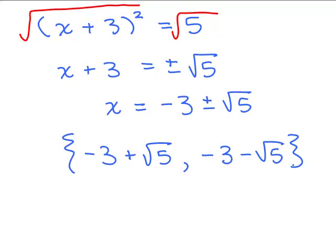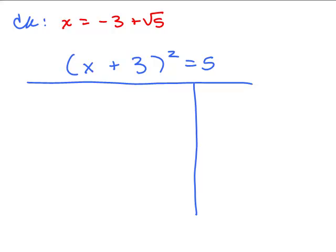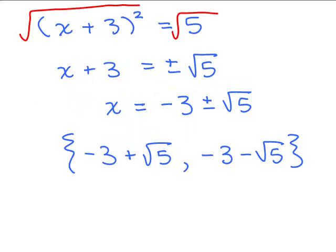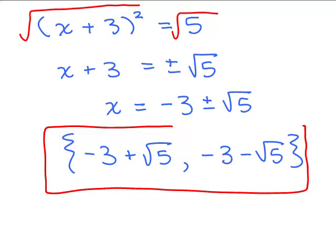Let's check the first solution. Plugging negative 3 plus square root of 5 in for x: inside the parentheses, negative 3 plus square root of 5 plus 3 — the negative 3 and plus 3 cancel — leaving just square root of 5. Then square root of 5 squared equals 5, which matches the right-hand side. It checks. The other solution also works. So there are two solutions to this problem. In part 3 we'll continue with more examples using the square root property.